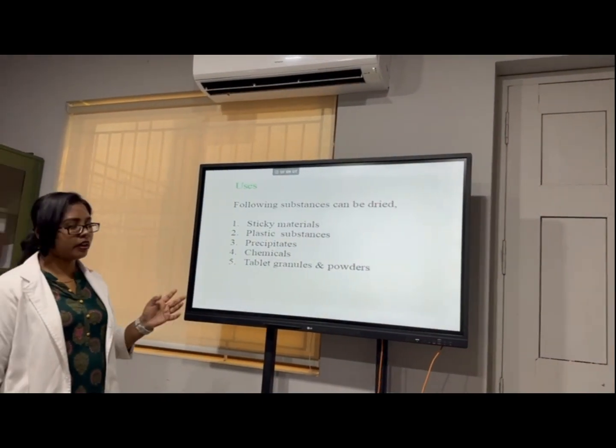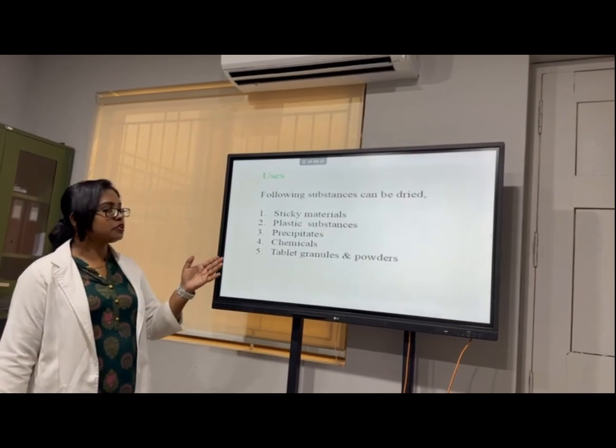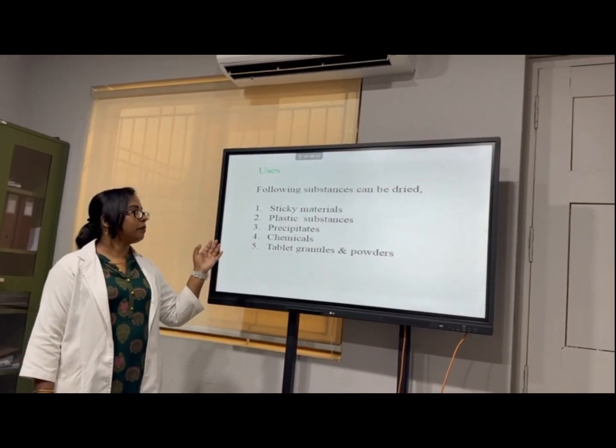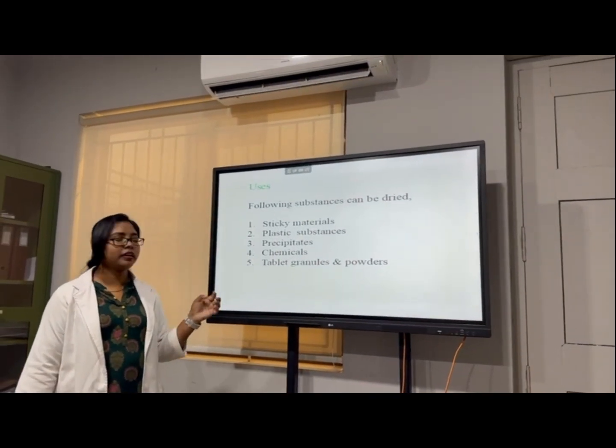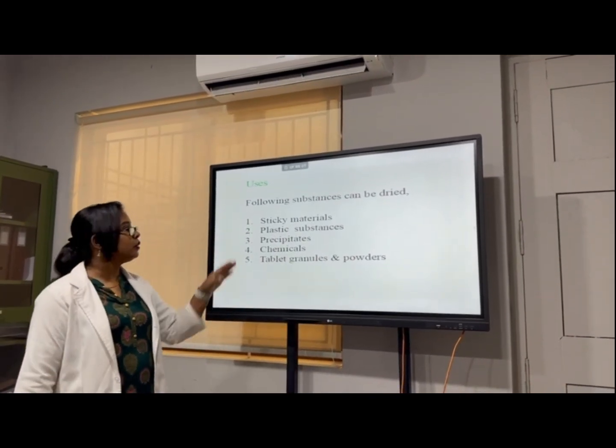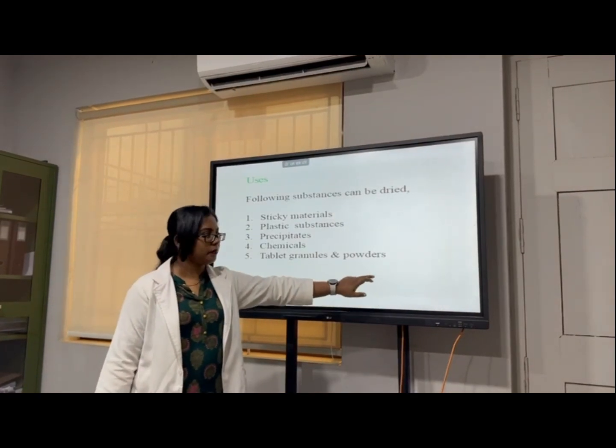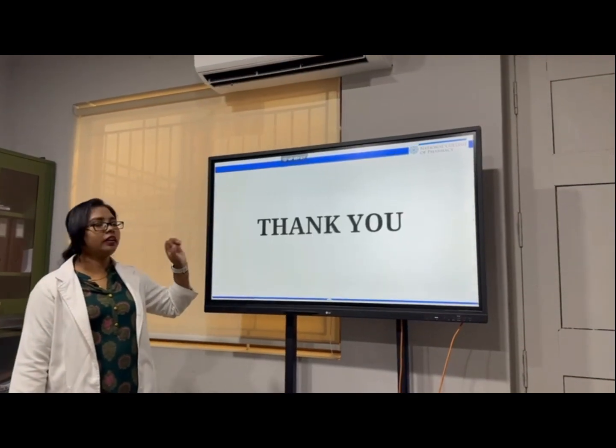Uses of the tray dryer: the following substances to be dried like sticky materials, then plastic substances, then precipitates, chemicals, and tablet granules. These are the uses of the tray dryer. Thank you.